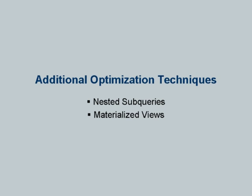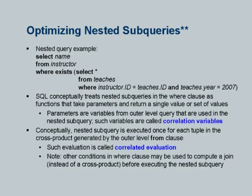Let me wrap up by mentioning a few more important things about optimization. So far we focused on join order optimization, but you have been using a lot of nested subqueries. What do you do with nested subqueries? What should an optimizer do? How does it evaluate nested subqueries? It turns out this is a very important issue.